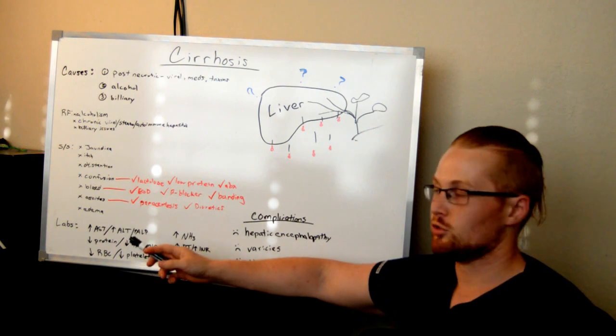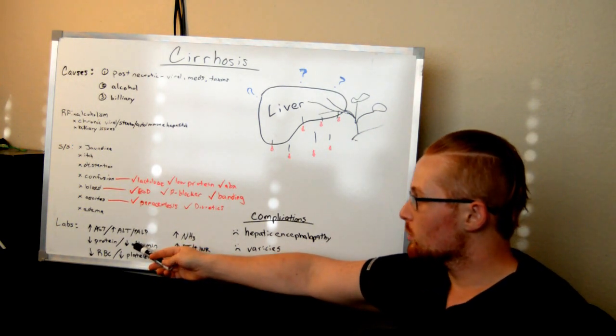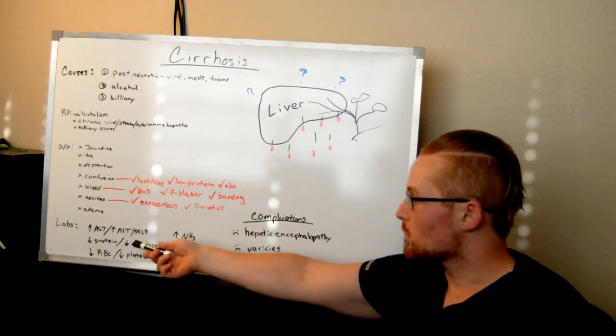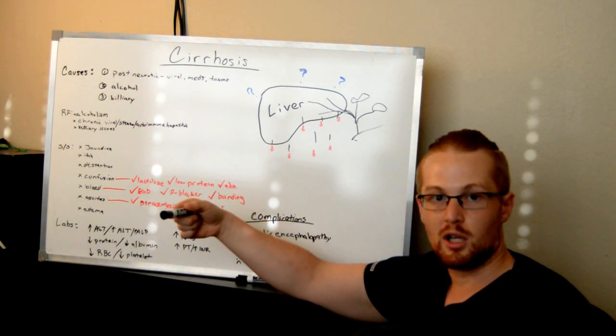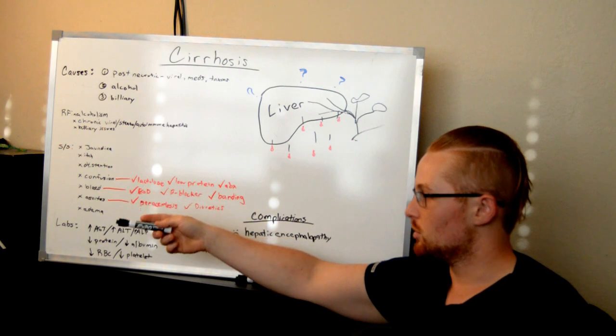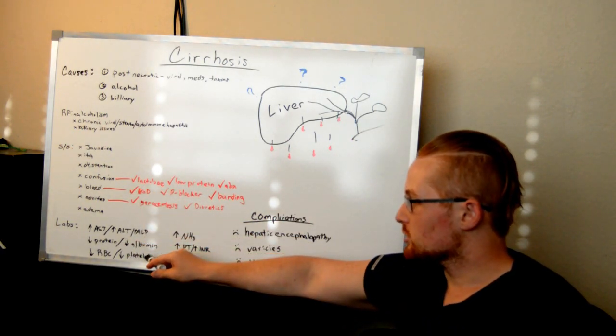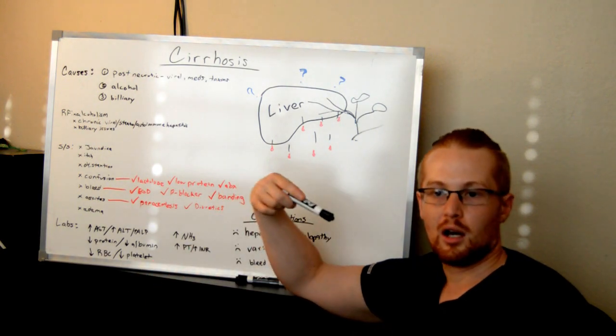You may see low amounts of protein and albumin. Albumin is just a type of protein. Low levels of protein and albumin floating in the blood because it's not able to synthesize those. You may see decreased amounts of platelets and blood cells from bleeding and pain.